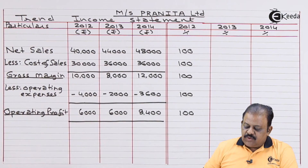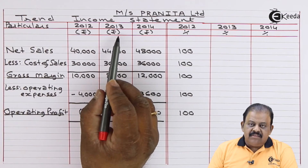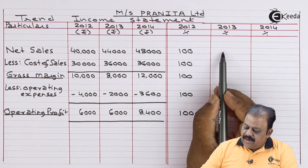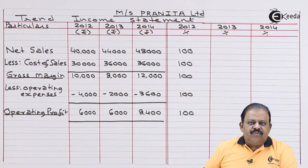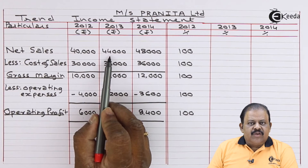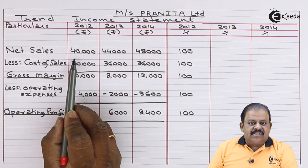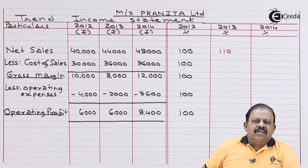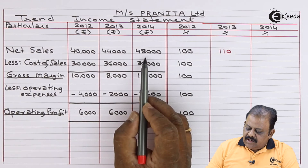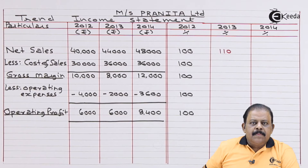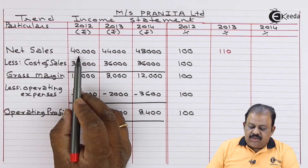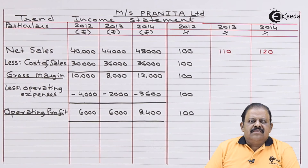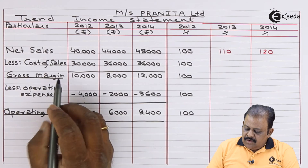For net sales in 2012, the base year value is 40,000 — taken as 100. For 2013, current year net sales is 44,000 divided by base year 40,000 multiplied by 100, which equals 110. For 2014, net sales is 48,000 divided by 40,000 multiplied by 100, which equals 120 percent.